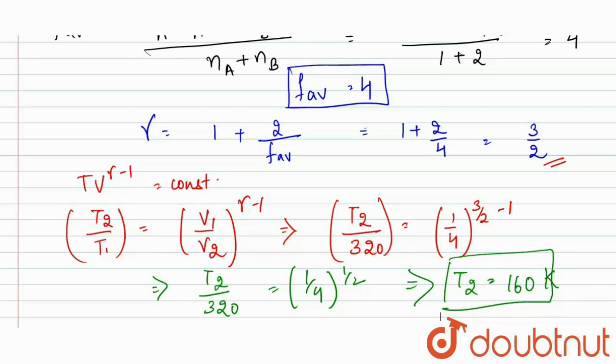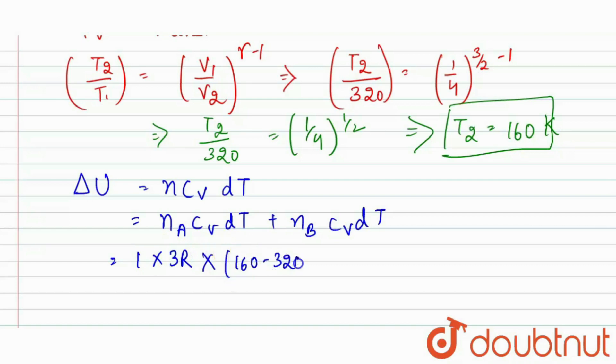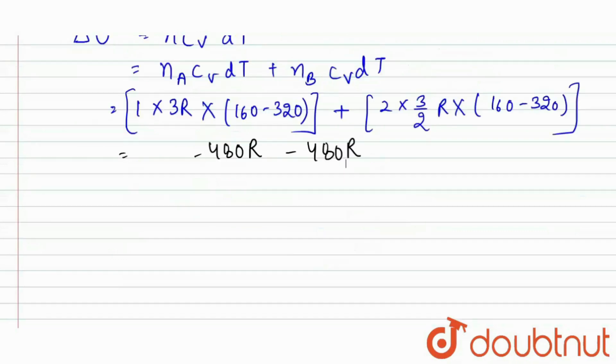Now we can find delta U. We have delta U equals nCvdT, but we have two ideal gases. So it will be nACvdT plus nBCvdT. It equals 1 into 3R into 160 minus 320 plus 2 into 3 by 2R into 160 minus 320. If we solve this, it equals minus 480R minus 480R. From here we have delta E or delta U equals minus 960R. That's our required answer.